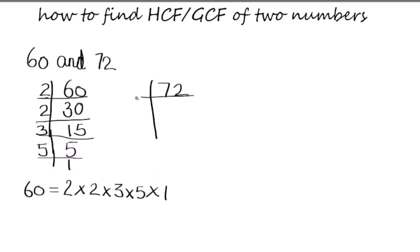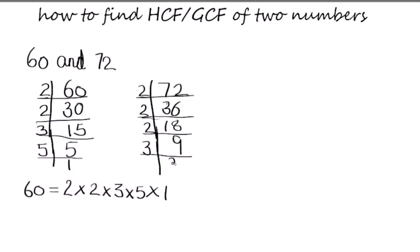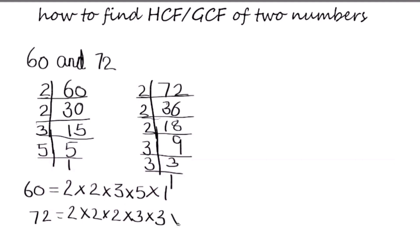Now we will find the factors of 72. 72 is an even number, so we start dividing by 2, which gives us 36. Again we can divide by 2 to get 18. 2 times 9 is 18. For 9, we use 3 as the divisor: 3 times 3, and 3 times 1. So the factors of 72 are 2 × 2 × 2 × 3 × 3 × 1.